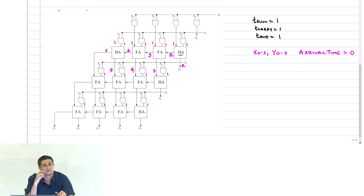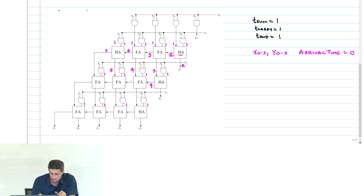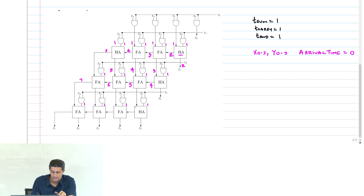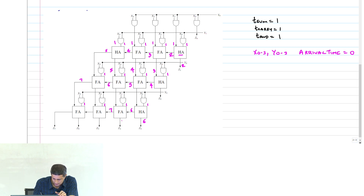At the next stage, we have arrival times: 4, 5, then 5 and 6, then 6, 6, and 7 at the last stage.